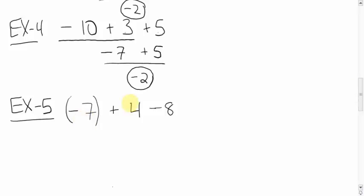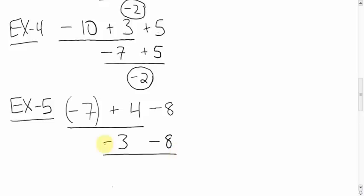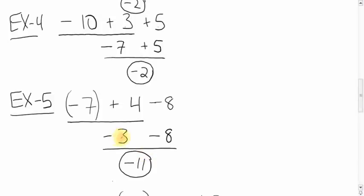Here's another one: -7 + 4 - 8. Underline the first thing to do so your brain can focus on it. Negative 7 + 4: you're down 7 and up 4, which means you are down 3. Bring down the minus and the 8. Now -3 - 8: you're down 3 then down 8, you are down 11. You can also use the number line — start at -3, change direction and go back 8 to get to -11.